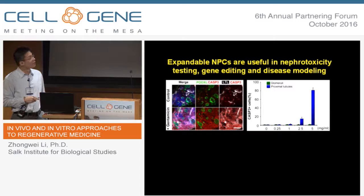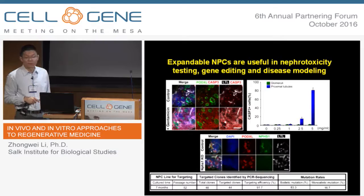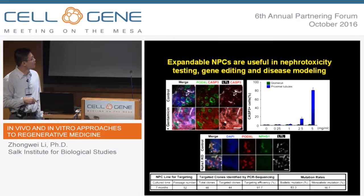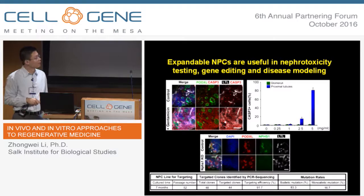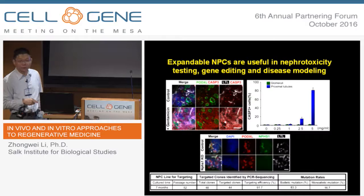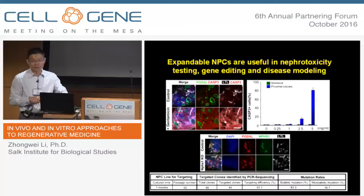The long-term stable expansion of MPCs is also suitable for gene editing and making new disease models. To provide proof of concept, we used the CRISPR-Cas9 system in MPCs to knock out the NPHS1 gene, which is a critical factor in podocytes. The targeting efficiency was very good, with more than 90% targeting and more than 80% biallelic mutations. When we selected one clone and differentiated it to nephron organoids, we confirmed that NPHS1 gene was not expressed, suggesting successful gene knockout.